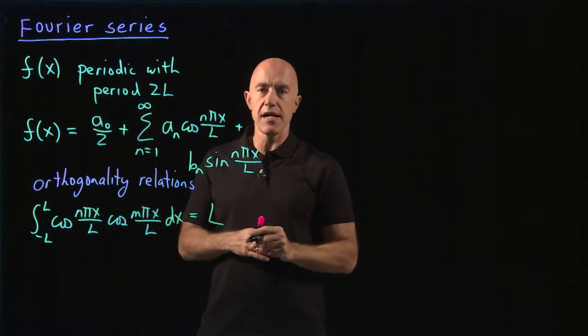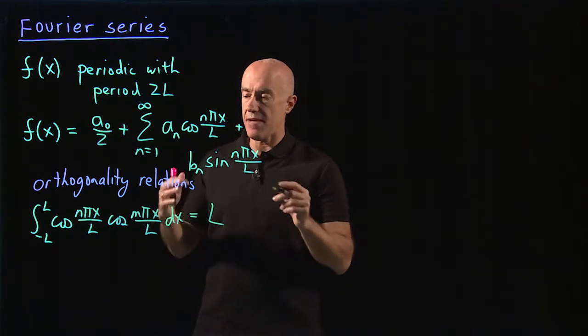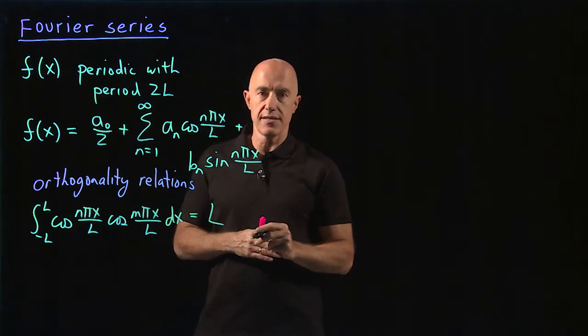That's called the orthogonality relation, because when n and m are not equal, you get zero.